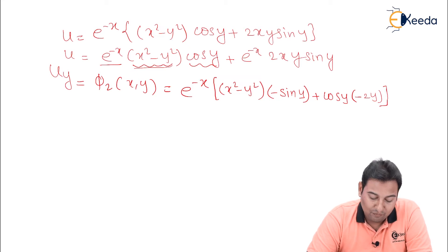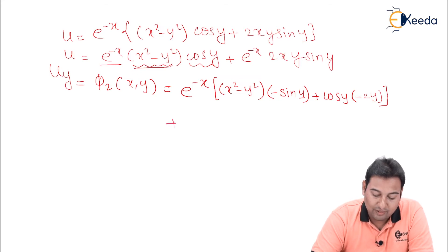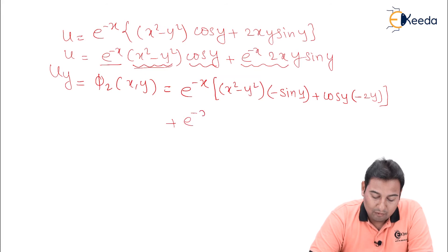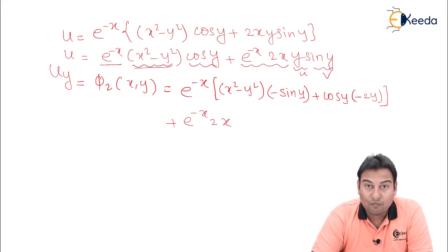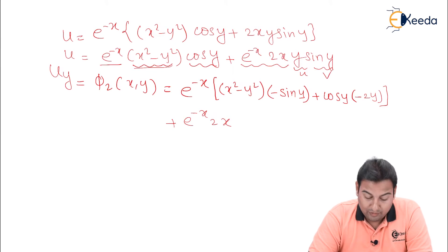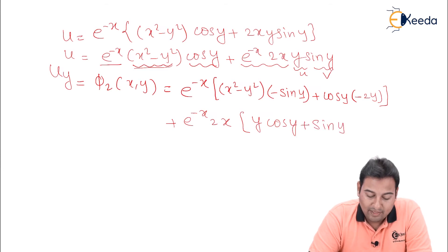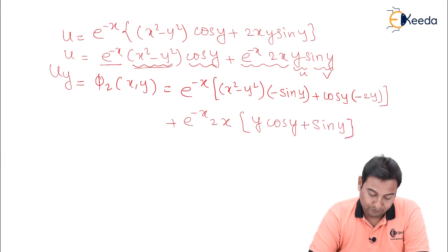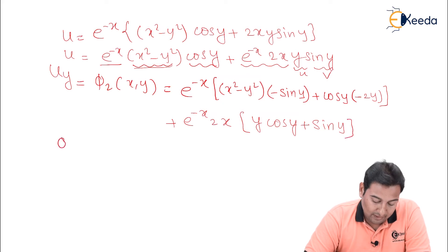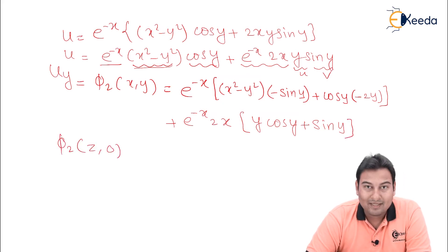For the second term, with respect to y, x is constant, so 2x is constant. Applying the product rule: y as it is, times the derivative of sin y which is cos y, plus sin y as it is, times the derivative of y which is 1. This completes the expression for φ₂(x, y). Now let us find φ₂(z, 0).